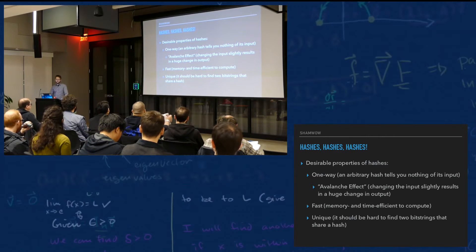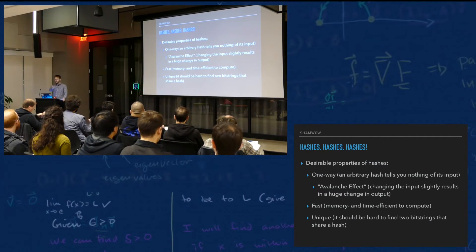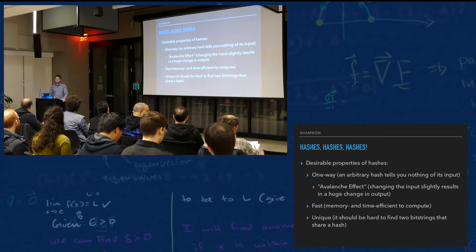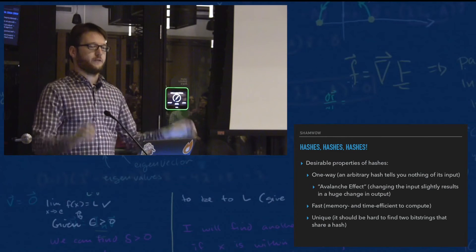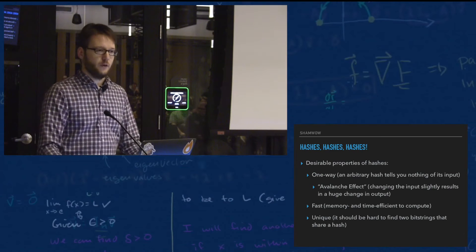And unique — it should be very hard to find two different inputs that give the same output. Because then you could theoretically provide someone a file with a given hash, but it's actually malicious code — mining bitcoins on your computer, something like that. That's why Shattered mattered: you could say these two PDFs are the same according to SHA-2, although they are visibly different when you load them in Adobe.